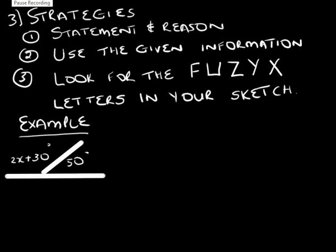Let's look at the following sum. We have 2x plus 30 and on the other side we have 50 degrees. What shape is this? Going back to our foundations — look for those letter shapes. Do you see the Y shape? That is a Y shape, so that gives us angles on a straight line.